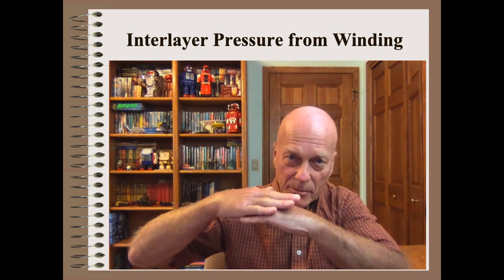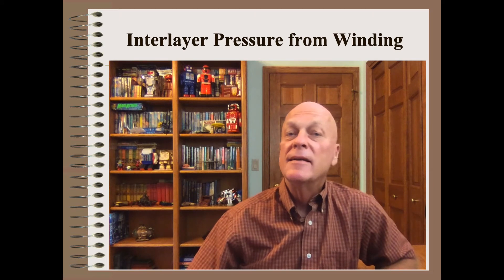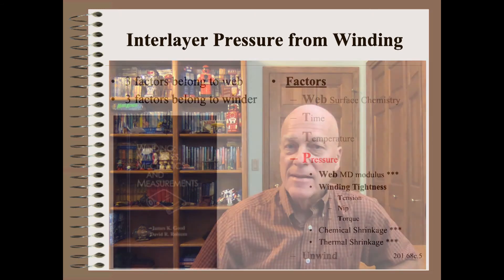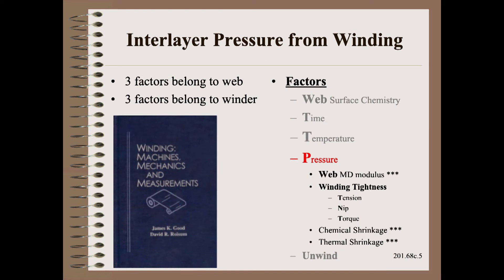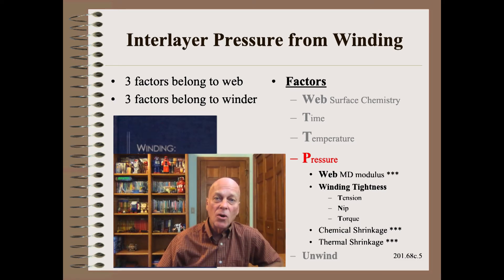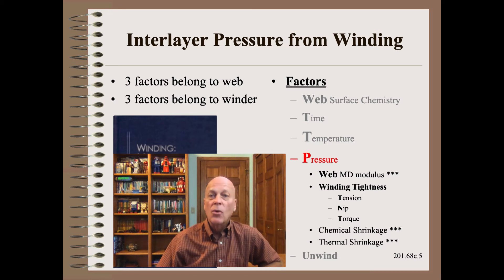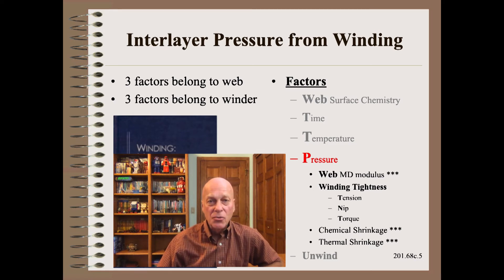The pressure between the layers inside a wound roll is a decade-old, well-verified science that requires book-length discussion to detail. The factors that determine the pressure in the wound roll include position, MD modulus, winding tension, winding nip, and winding torque if your winder is so equipped. In some cases, such as thermoplastic films, chemical shrinkage and thermal shrinkage are strong factors — often stronger than the winder itself.